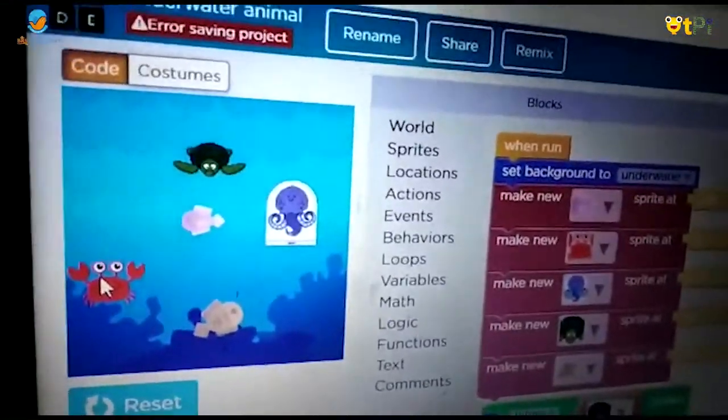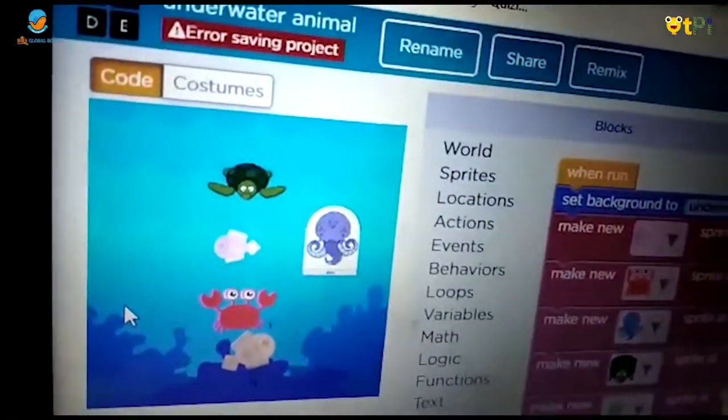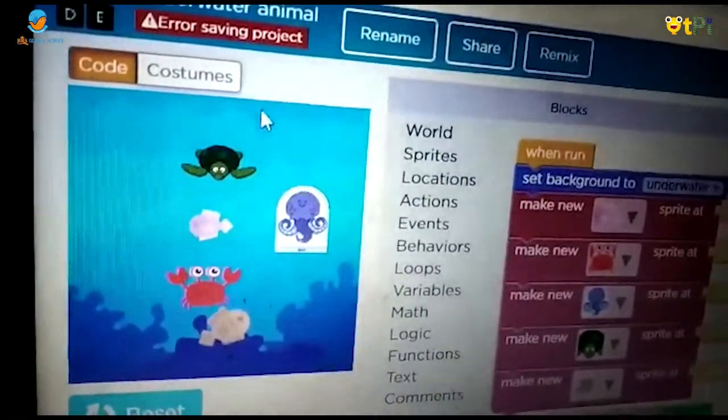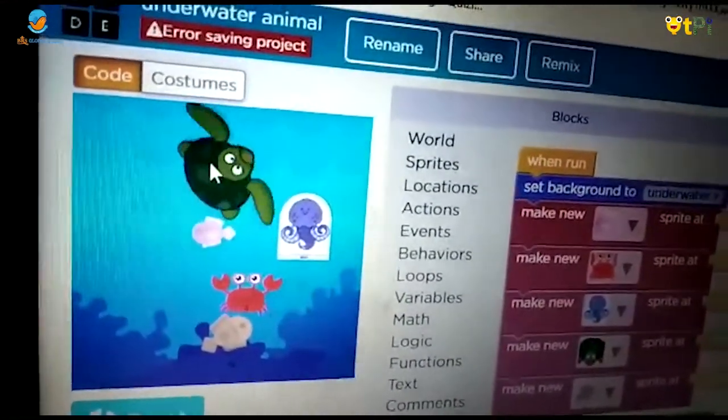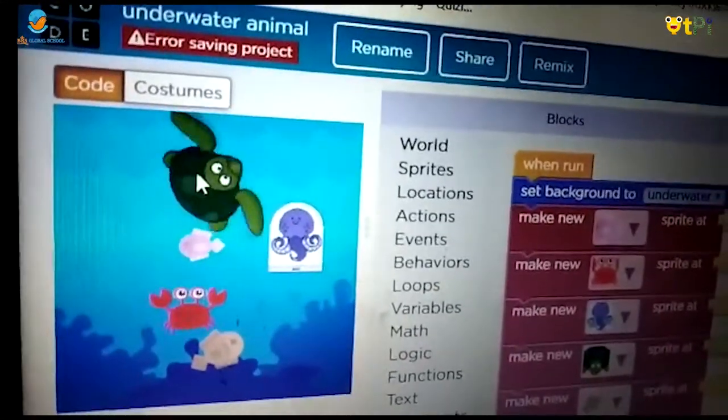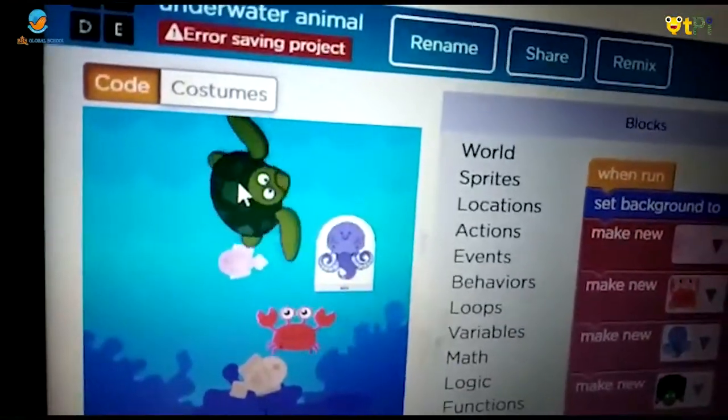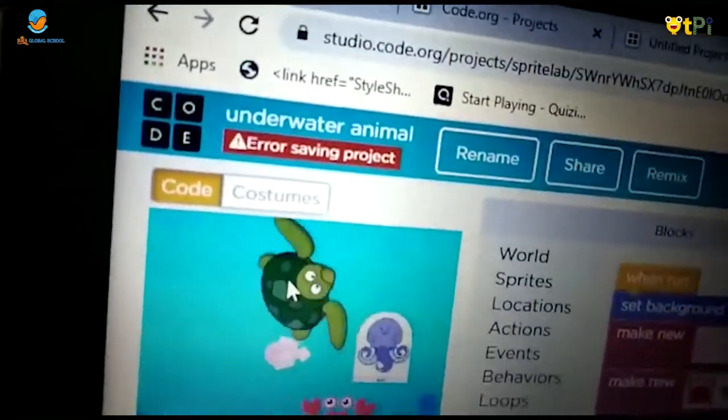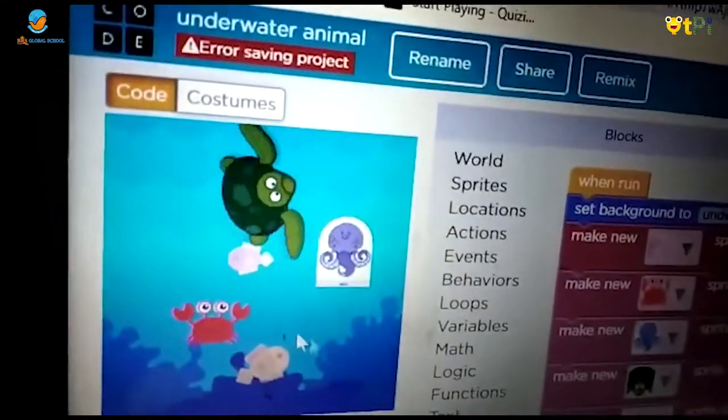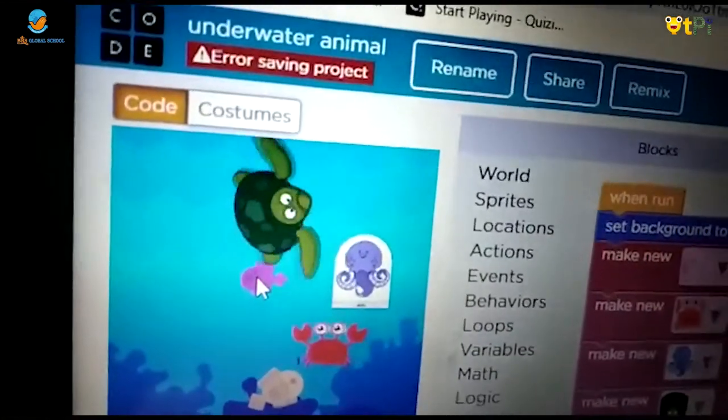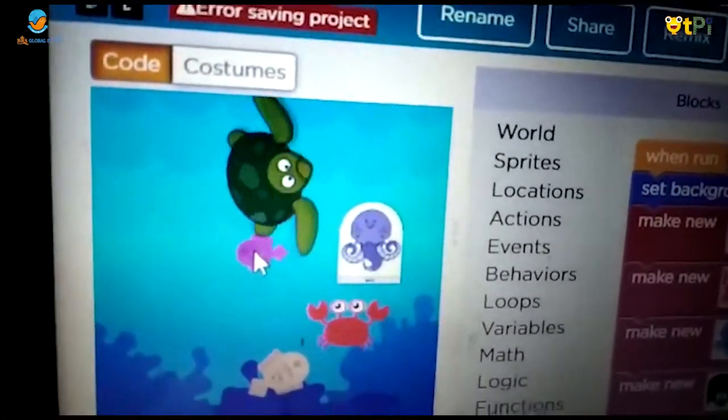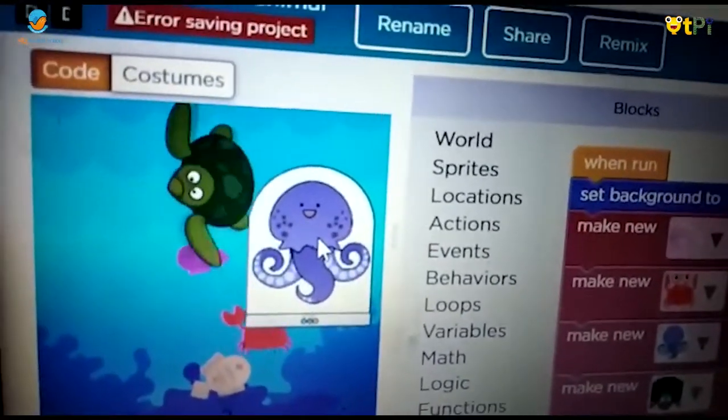When I click this crab it will swim left and right. When I click this tortoise it will spin round and round. If I click this fish it will turn into purple. When I click this big octopus it will grow big.